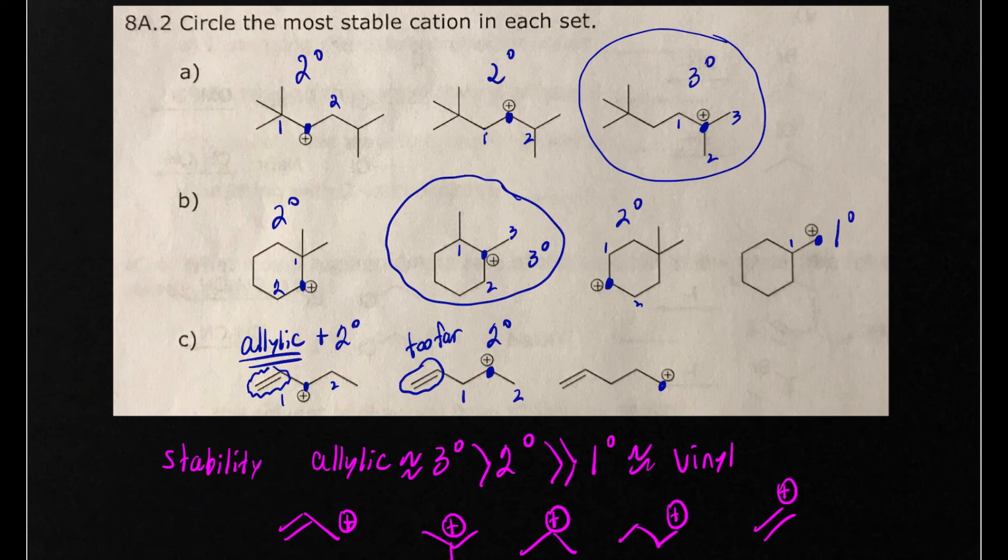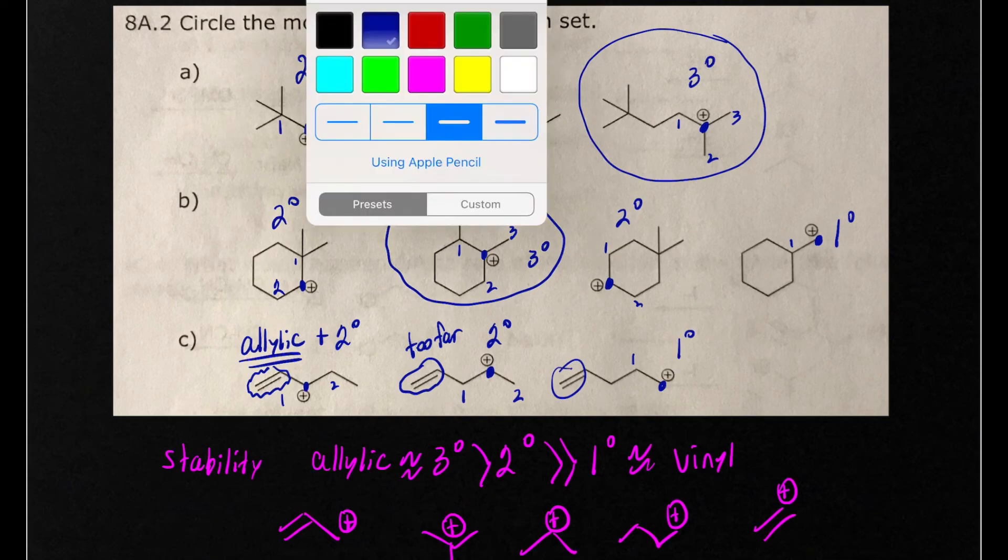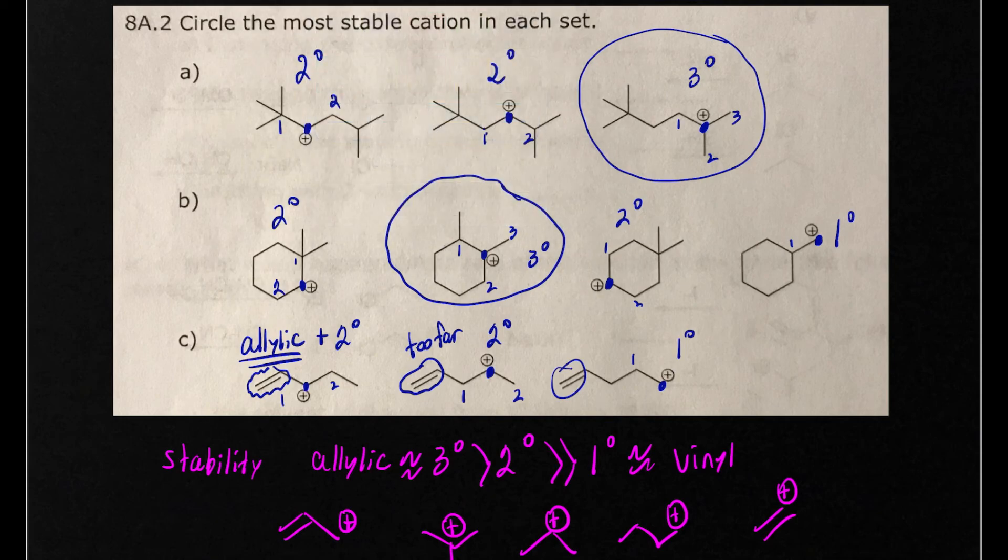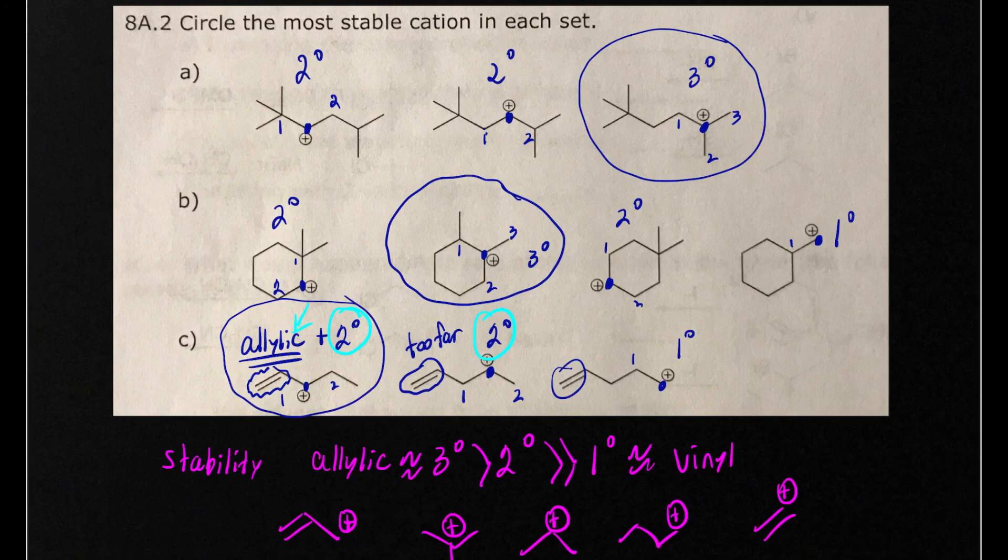Same with over here, it's too far away. So we count the carbons, this is just one thing attached. So when you look at these two options here, it's important to realize that this is secondary and this is secondary, so it appears to be a tie, but this is allylic and it's resonance stabilized. So what that means is that this one here is going to be the most stable carbocation.